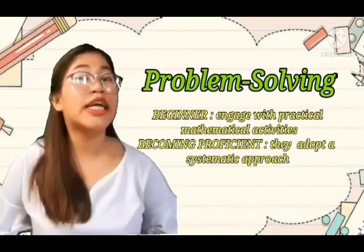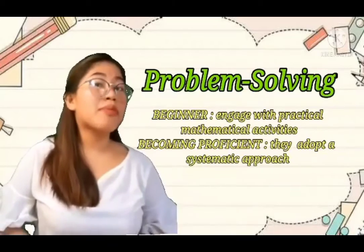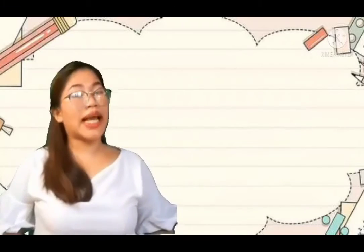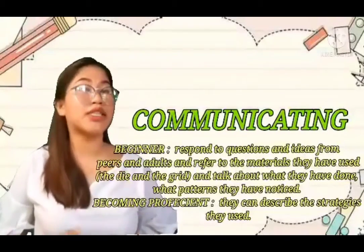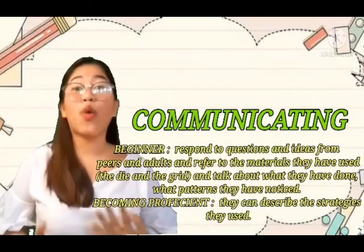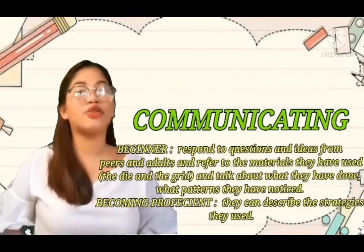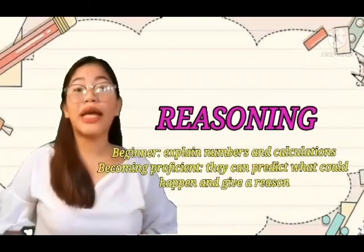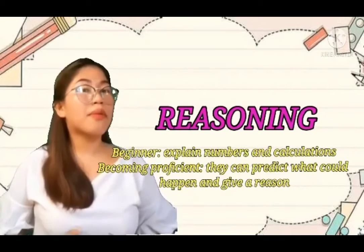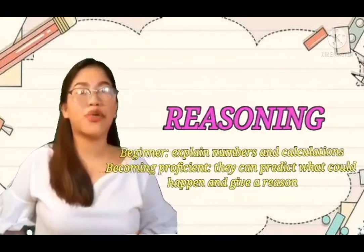In problem solving, the beginner engages with practical mathematical activities; when becoming proficient, they adopt a systematic approach. When communicating, the beginner responds to questions and ideas from peers and adults, refers to materials they have used, talks about what they have done and what patterns they have noticed; when becoming proficient, they can describe the strategies they use. In reasoning, the beginner explains the numbers and calculations; when becoming proficient, they can predict what could happen and give a reason. Try the game in your classroom, meet back as a staff, share findings, and decide how to develop your classroom cultures.